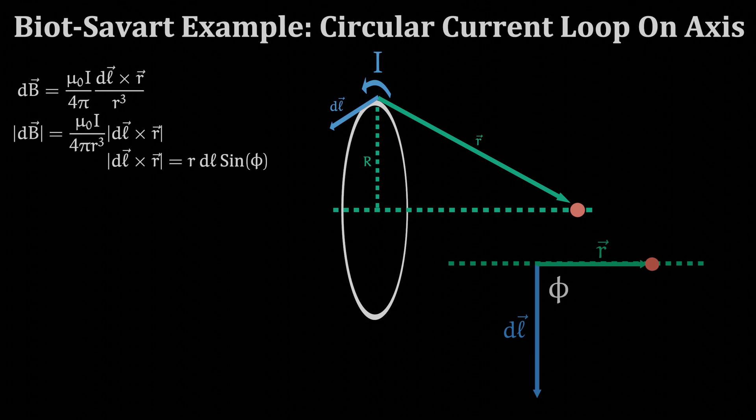We know that we will eventually need to integrate around the entire loop to get the full B field. When we do this this angle phi will always be 90 degrees. This means the sine of the angle phi will always be equal to 1.